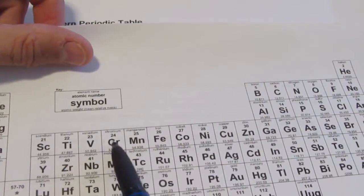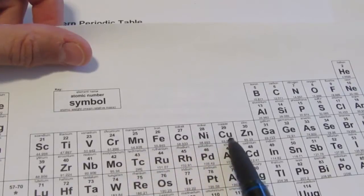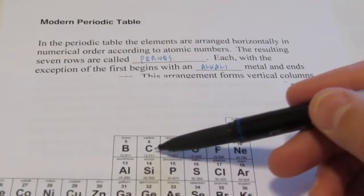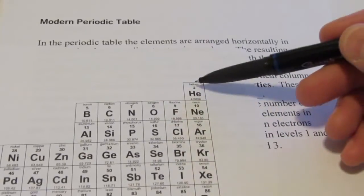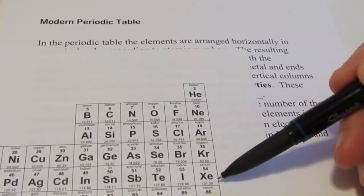And then we have group 3, 4, 5, 6, 7, 8, 9, 10, 11, 12, group 13, 14, 15, 16, group 17, these are called the halogens. And then finally group 18, these are called the noble gases.